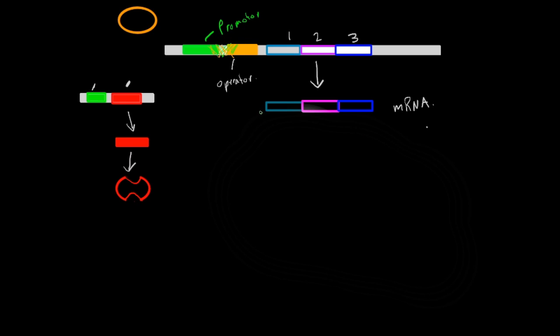So in this one a negative repressible means that transcription is always happening. So this repressor is always inactive and it's always transcribing, making these enzymes here that are always making something.